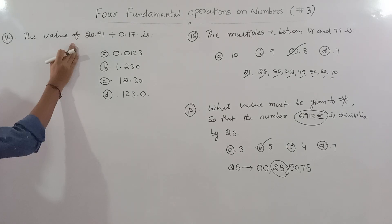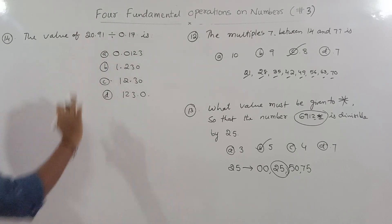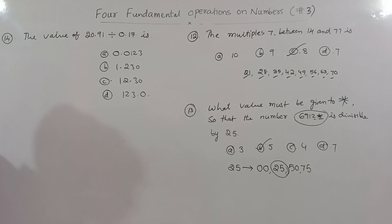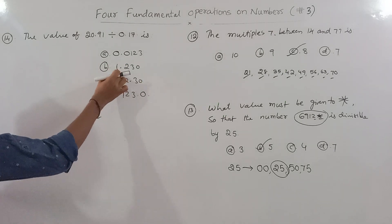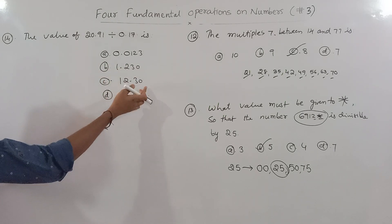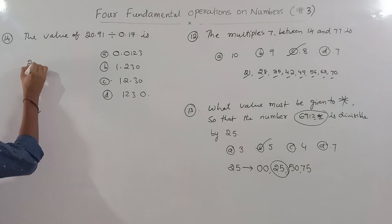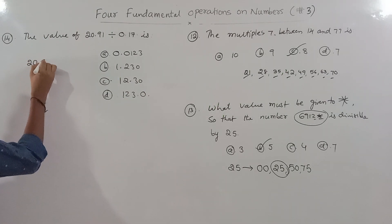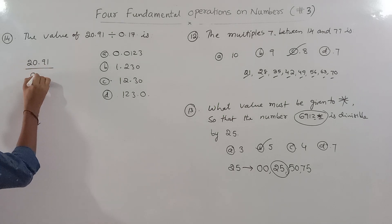Next, look at this: the value of 20.91 divided by 0.17. The options are 0.0123, 1.230, 12.30, and 123.0. So we calculate 20.91 ÷ 0.17.